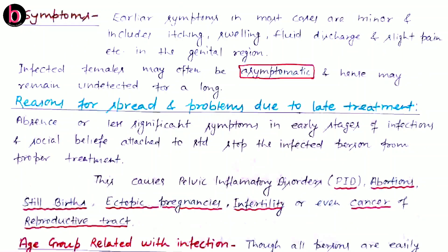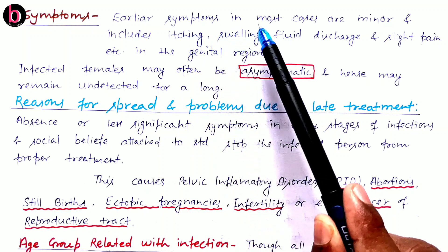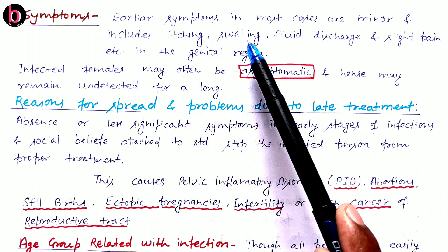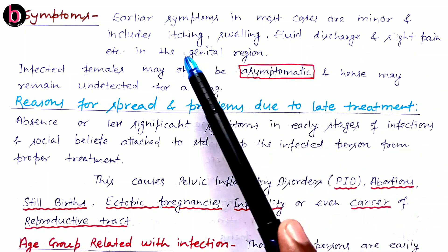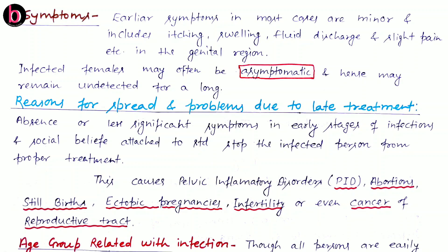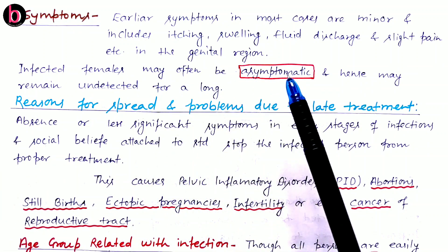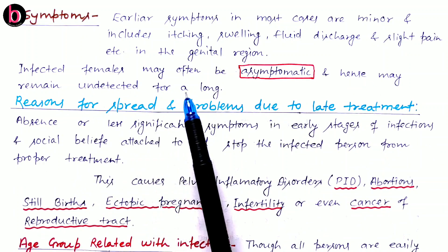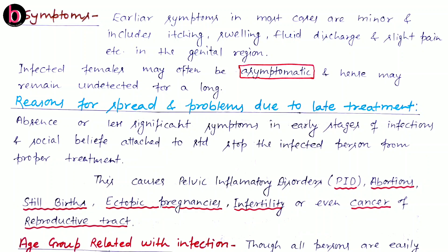Regarding symptoms: in the case of STDs, early symptoms in most cases are very minor, and these include itching, swelling, fluid discharge, and slight pain in the abdominal or genital region. Infected females may often be asymptomatic, meaning no symptoms are reflected in infected females in the early stages, and hence the infection may remain undetected for a long time. In the absence of symptoms, there is no treatment, which causes further spreading of the disease from one person to another.